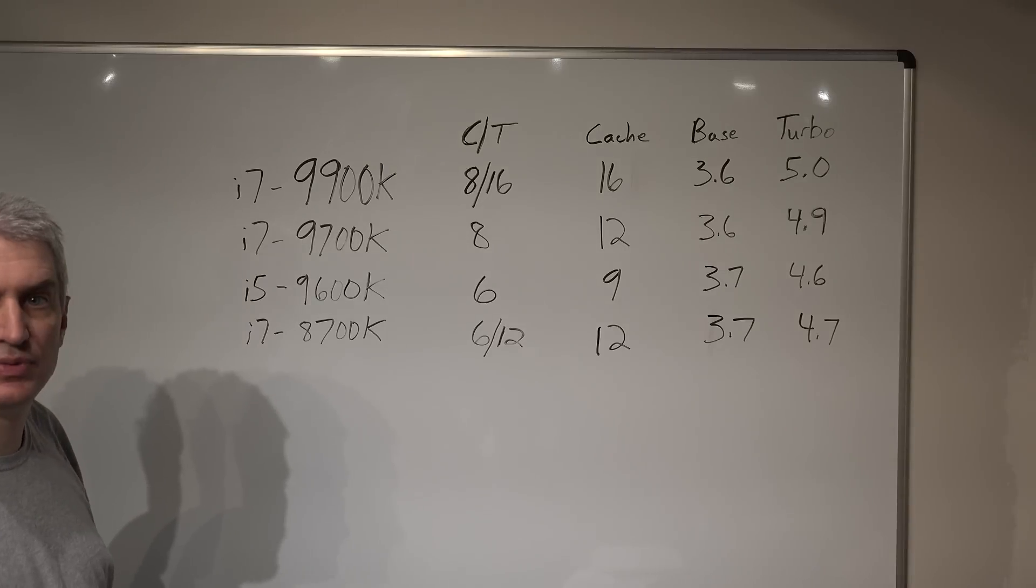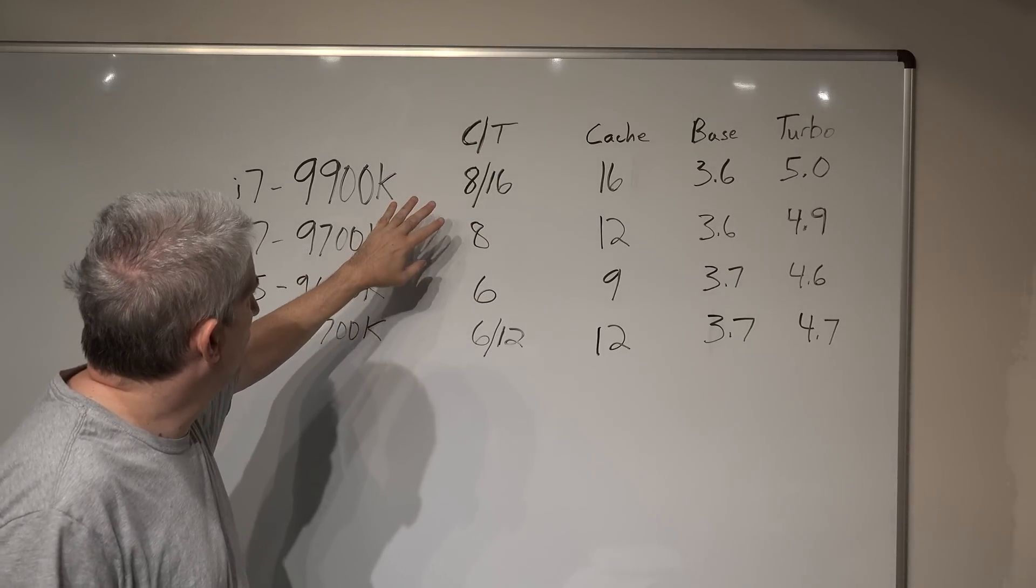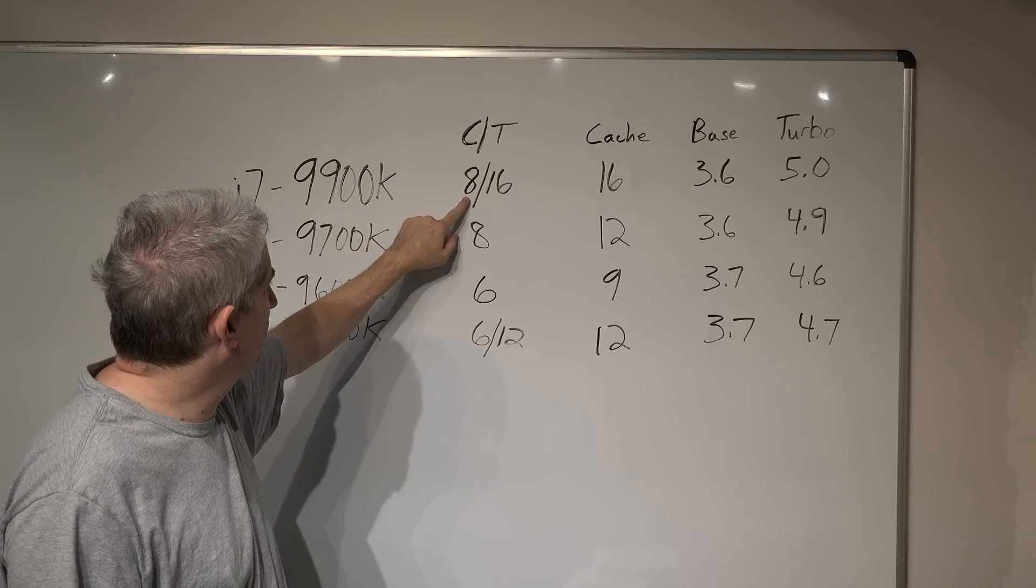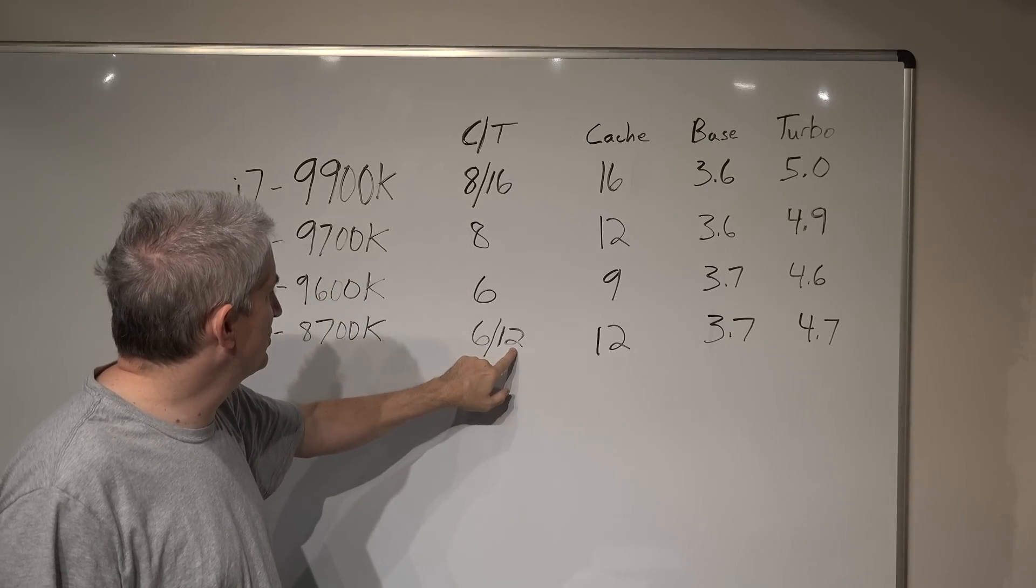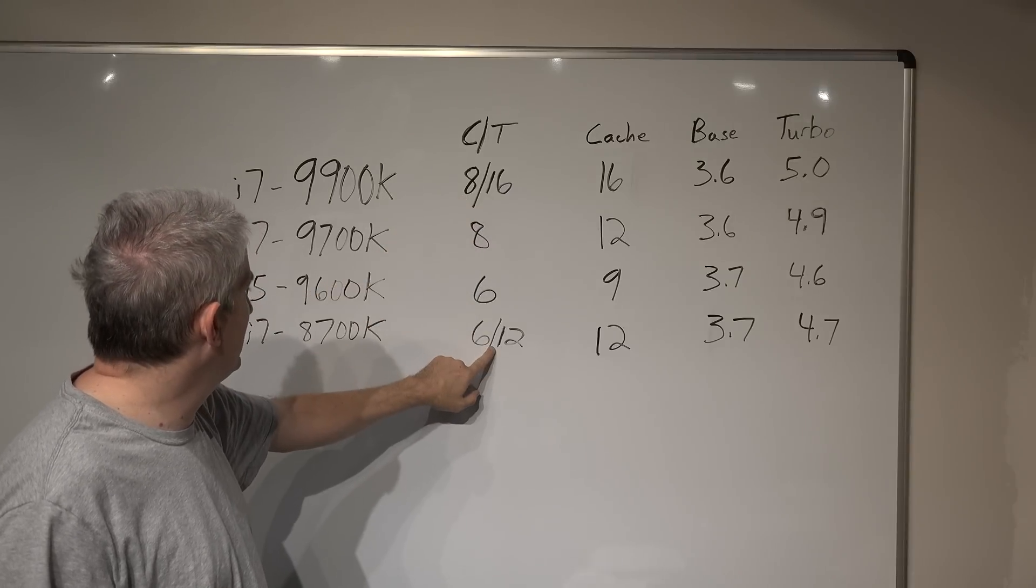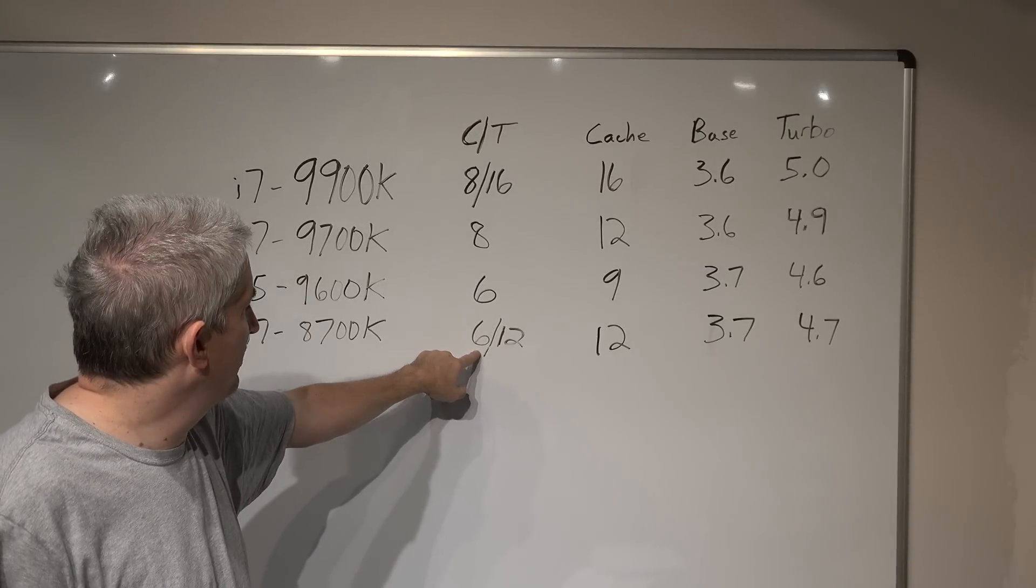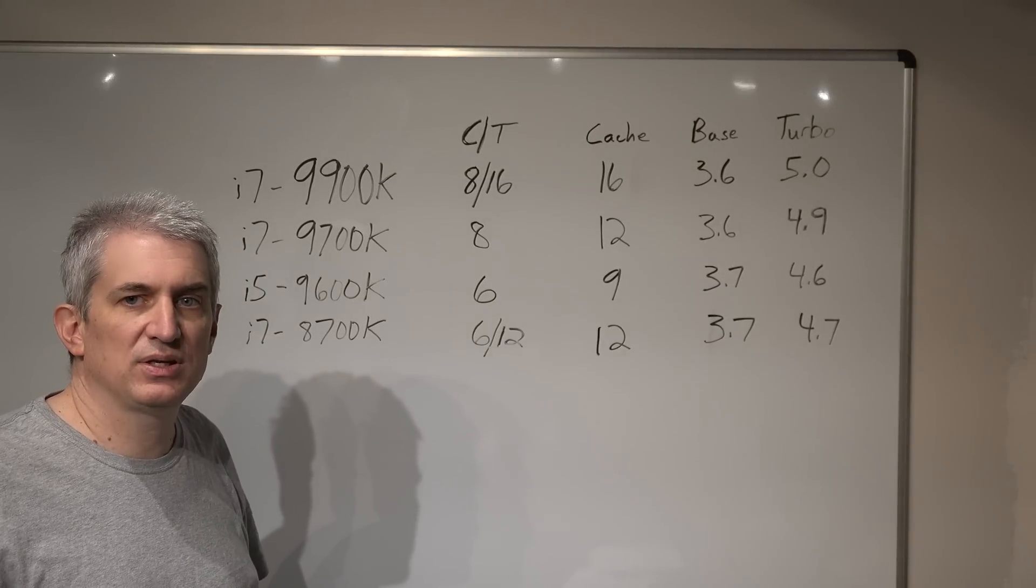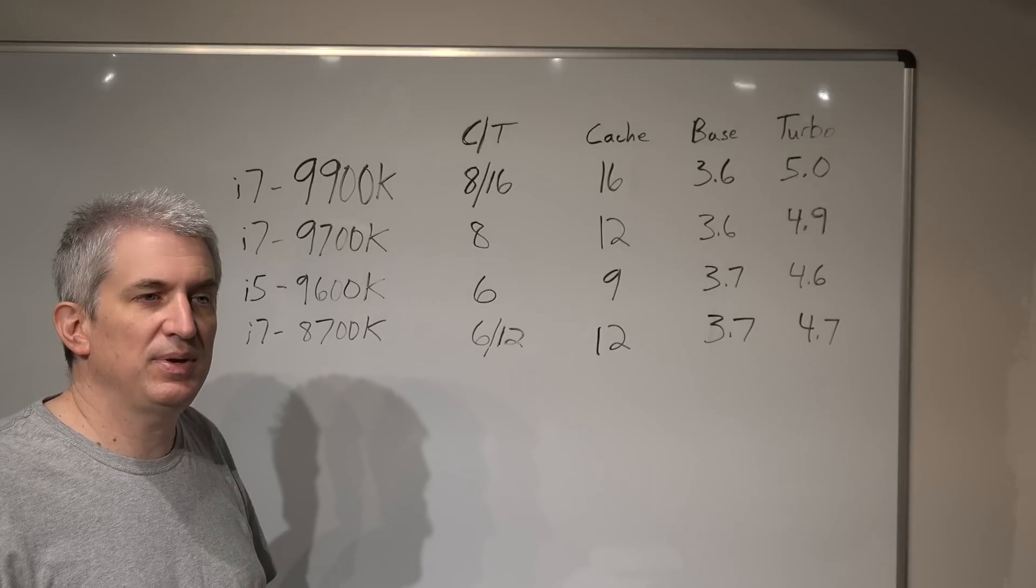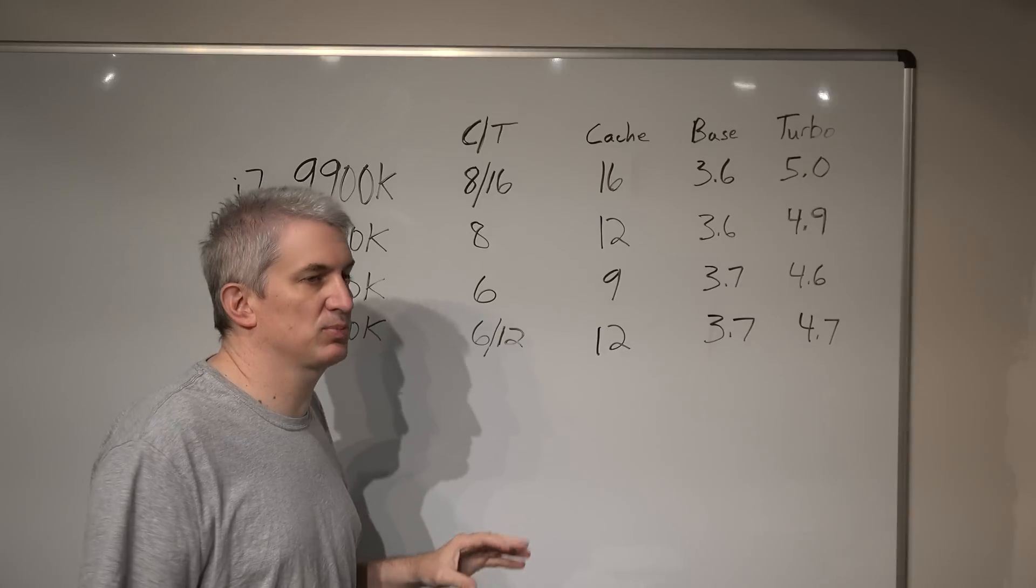Now we'll talk about the core count. The next thing I want to talk about is cores versus threads. The bottom line is when it comes to X-Plane and gaming in general, you just care about cores. Threads aren't all that important. So on these two chips, the 9900K and 8700K, you'll see that they have double the number of threads as cores, and the reason is they have something called hyperthreading. Let me give you a very rudimentary explanation as to what hyperthreading is.